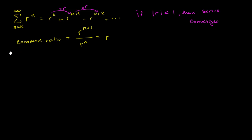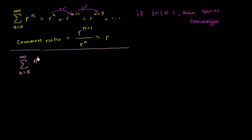With that out of the way for review, let's tackle something a little bit more interesting. Let's say we want to figure out whether a series like this — starting with n equals five to infinity of n to the tenth power over n factorial — converges. Factorial grows very, very quickly, probably much faster than even a high-degree term like n to the tenth, but how do we prove that it converges? We could use the divergence test to show it does not diverge, but how do we prove it actually converges?